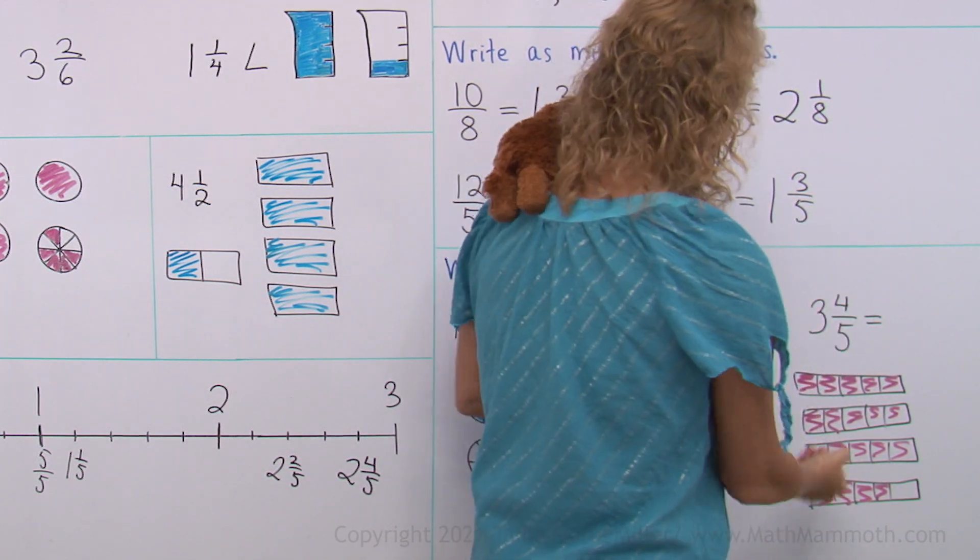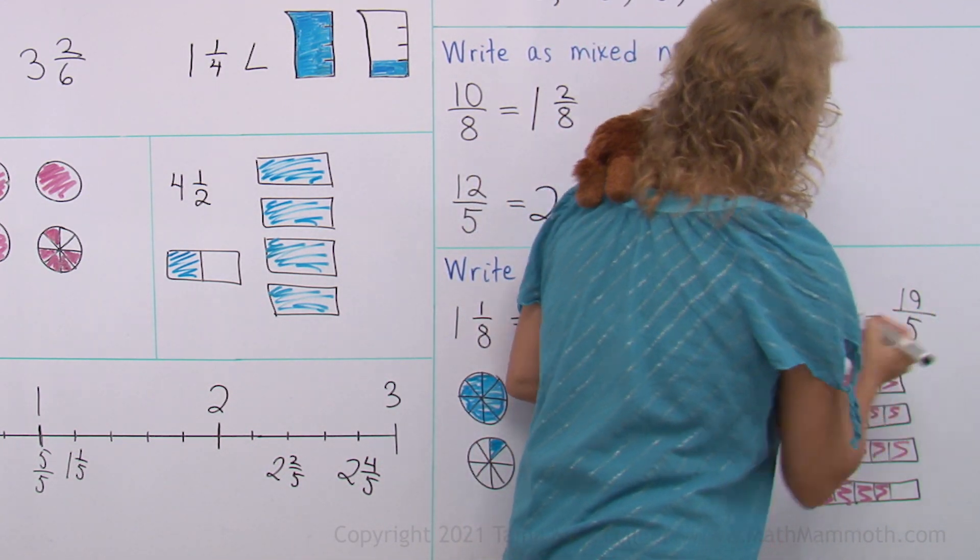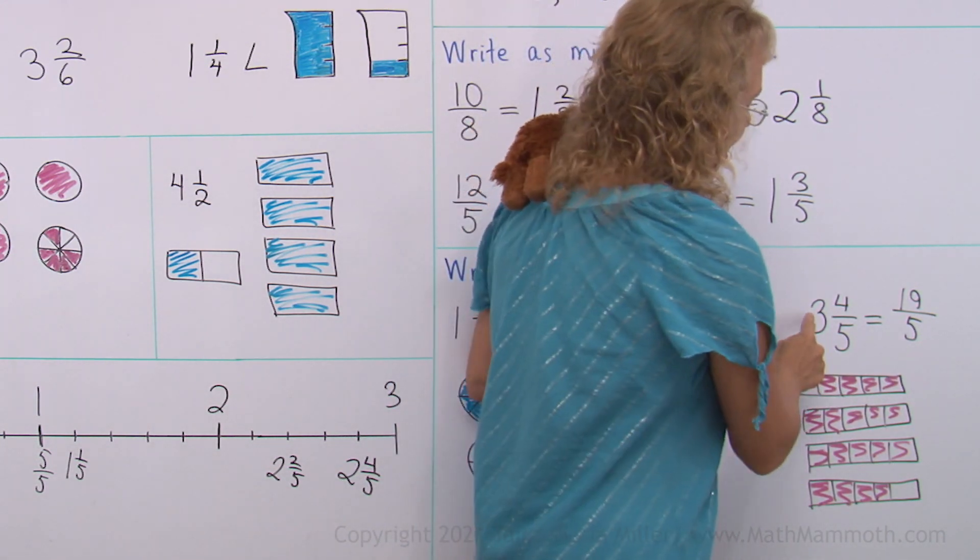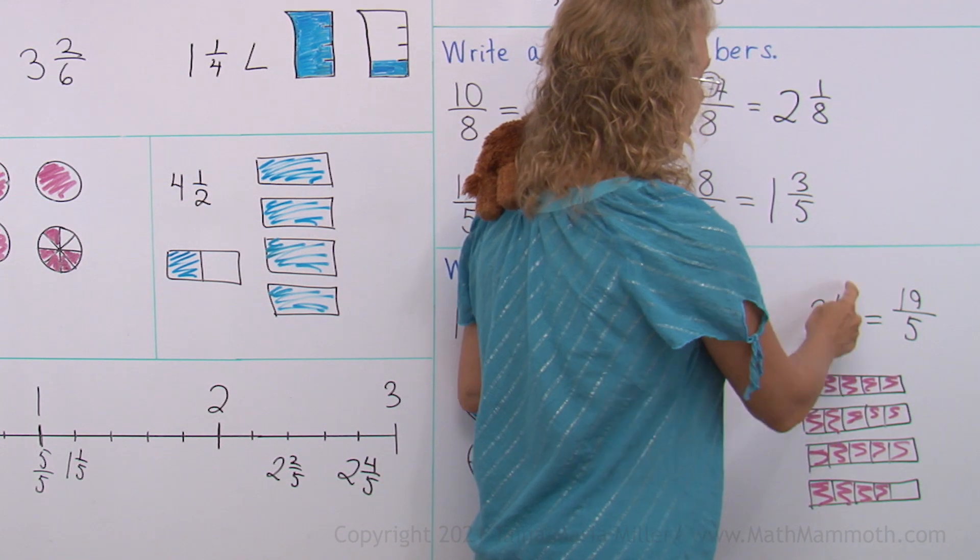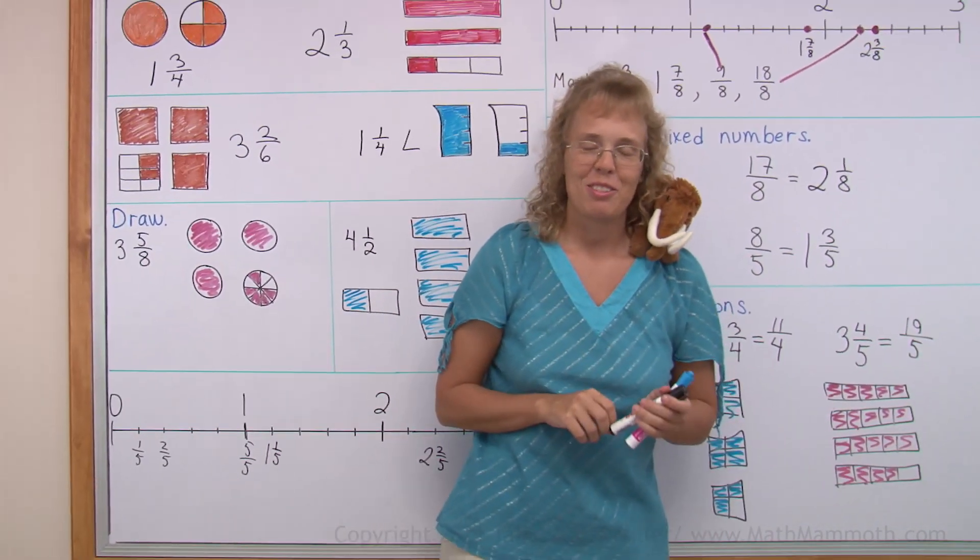3 times 5, 15, plus 4. 19 fifths. And indeed, there is a shortcut that we will study later in more detail. 3 times 5, 15 plus 4, 19. And they are all fifths. We're all done with this lesson.